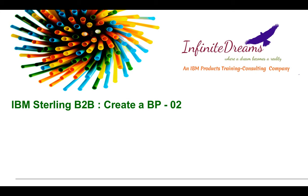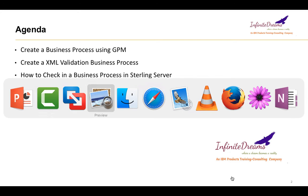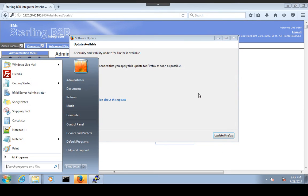In this IBM Sterling tutorial, we will discuss how to create a business process. We will create a process which will validate the input message. If the input message is an XML message, it will process that message and send it to the downstream system. If it is not an XML message, the process will throw an error. Let's see how to create such a business process using the GPM.